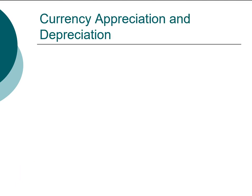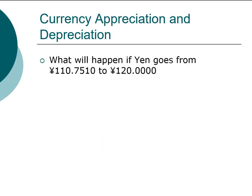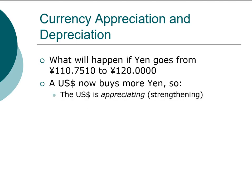When exchange rates change, we refer to a currency as appreciating or depreciating. For example, if the yen exchange rate goes from 110.751 to 120, that means one US dollar can now buy 120 yen instead of 110.751 yen — you can buy more yen per dollar. In foreign exchange language, the US dollar is appreciating or strengthening against the yen, while the yen is depreciating or weakening versus the dollar.